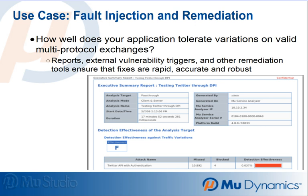Mu Studio enables the QA, SIT, or any other testing team to test real systems with variations on real-world traffic. Does your automated test plan include reality-based fault injection to ensure that your product or service is robust?